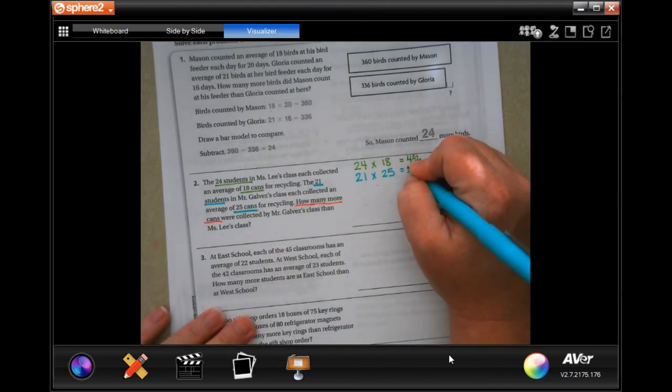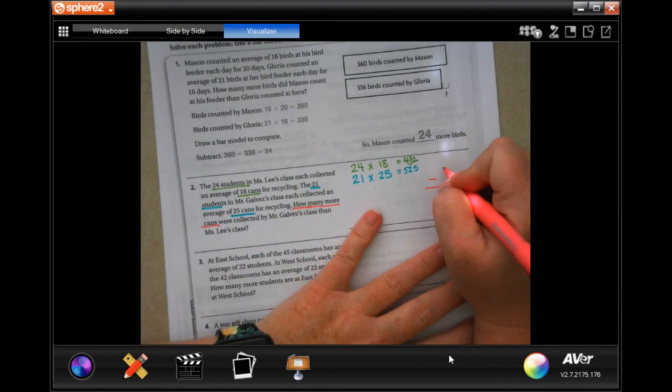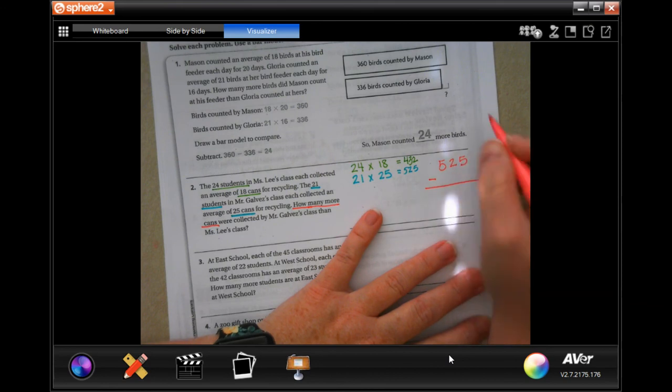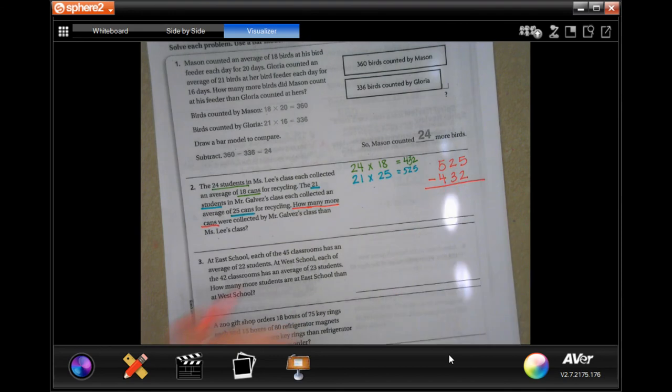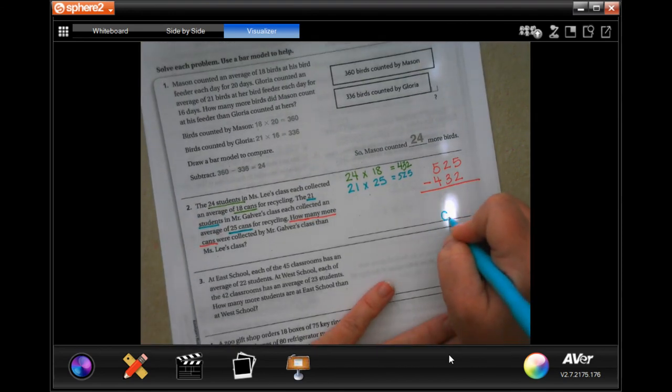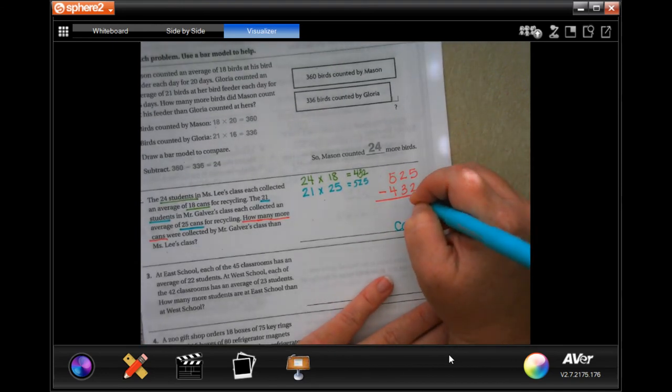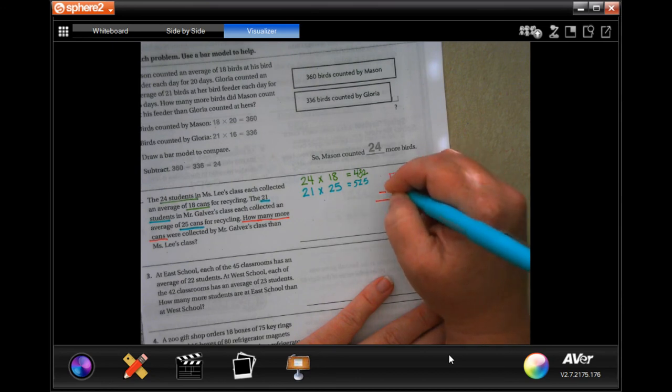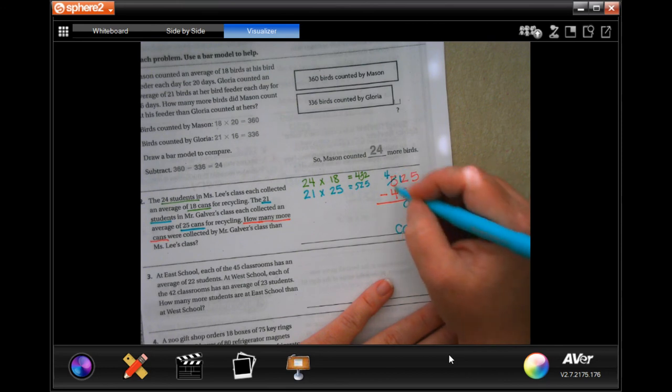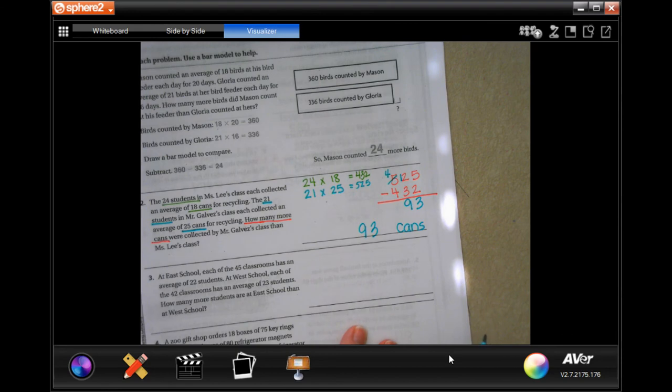So now I'm going to put 525 up top and 432 on the bottom. That's how we're going to find out the difference. And whatever it is, it's going to be in cans. So 5 minus 2 is 3. 2 cannot take away 3, so I need to borrow 1, making that 12. 12 minus 3 is 9, and 4 minus 4 is nothing. So 93 cans.